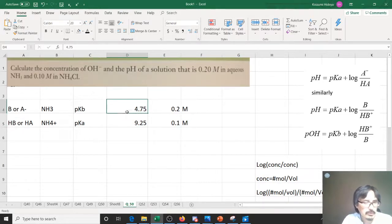So you get these things from the table, and then you get 0.2 and 0.1 from the problem.